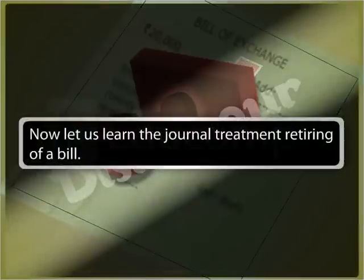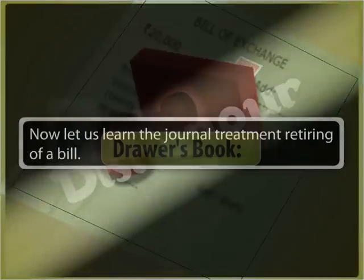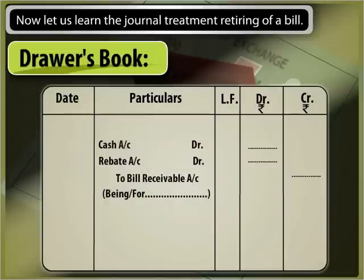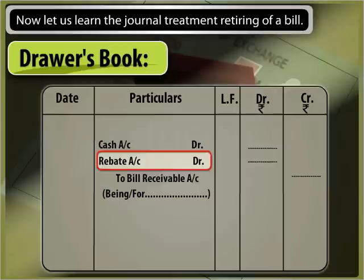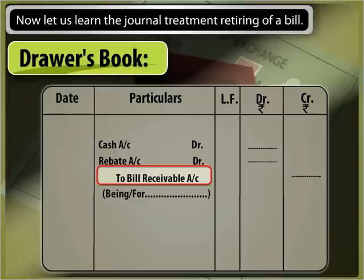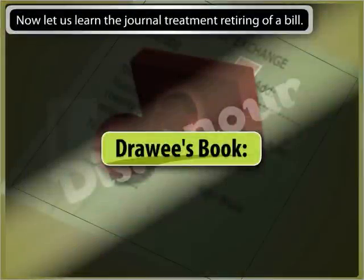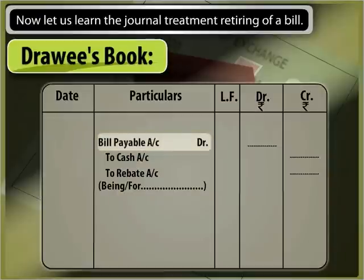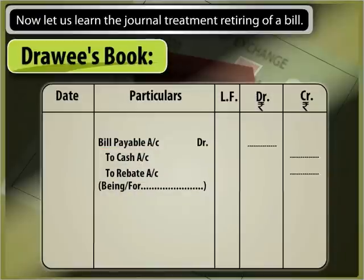Now let us learn the general treatment for retiring of a bill. In the drawer's book: cash account is debited with the actual amount received, and rebate account is debited with the amount of rebate granted, to bills receivable account. In the drawee's book: bills payable account is debited, to cash account, and to rebate account.